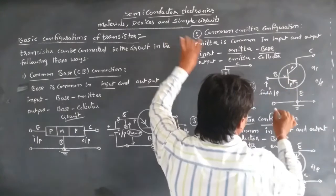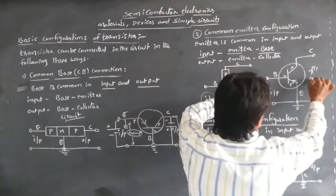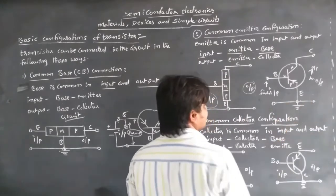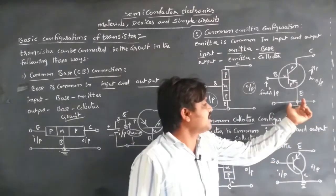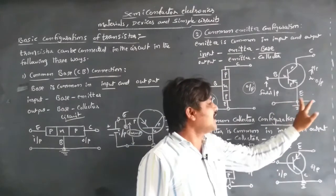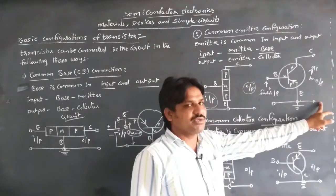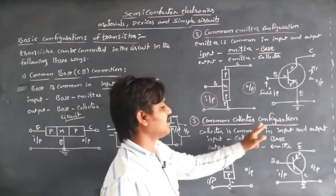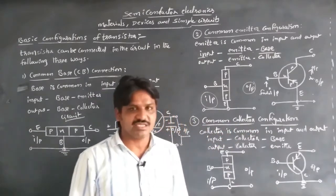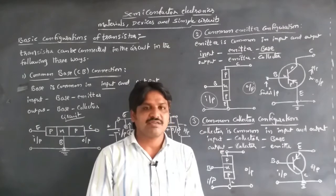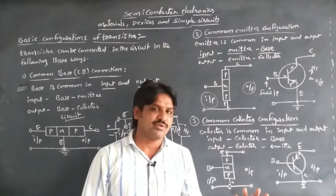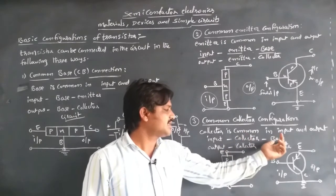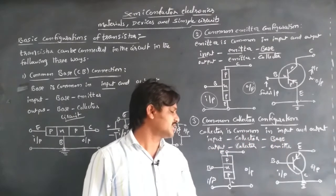By applying forward bias and reverse bias, we can get the voltage values between the collector and emitter. The emitter serves as the common terminal for both input and output. The third configuration is the common collector configuration, where the collector terminal is common for both input and output.